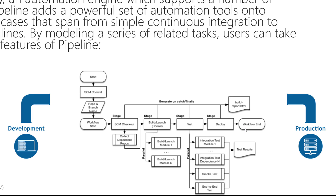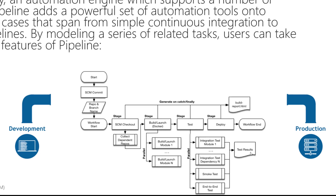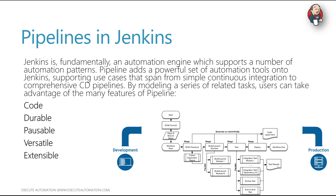This pipeline starts with an SCM commit, creates a repo, takes it from a specific branch, and the workflow begins. There are many different stages, each performing different operations like checkout, launching a Docker agent on a Jenkins agent, running tests, deploying the application, and generating a build report. This proves that Jenkins pipeline is very important for continuous integration and deployment workflows.